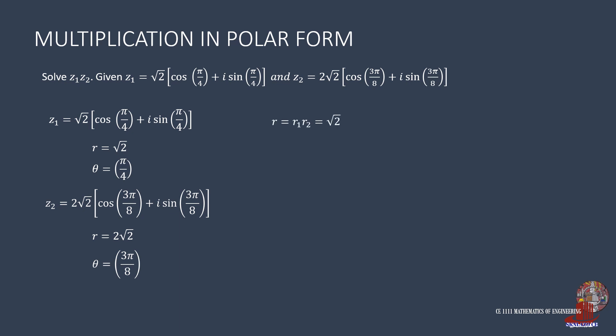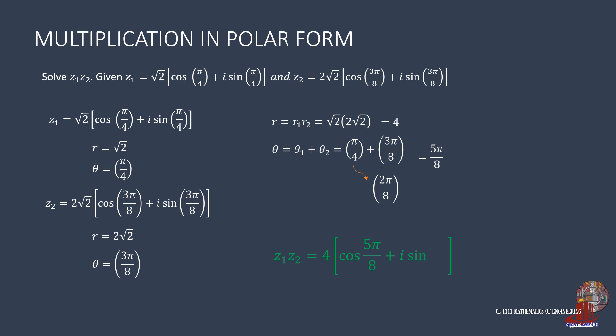r is the product of r1 and r2 — that's root of 2 times 2 root of 2, which gives 4. Theta is theta1 plus theta2, that is pi over 4 plus 3 pi over 8. Having different denominators, work on the LCD to add fractions. Pi over 4 converts to 2 pi over 8, so 2 pi over 8 plus 3 pi over 8 is 5 pi over 8. The product is 4 times cosine of 5 pi over 8 plus i times sine of 5 pi over 8.